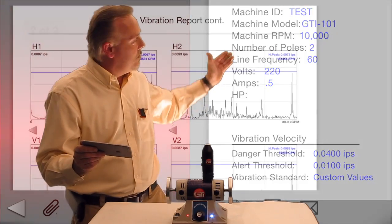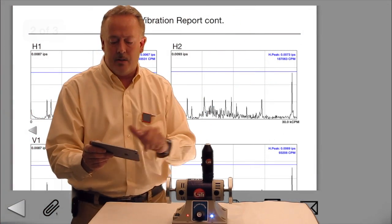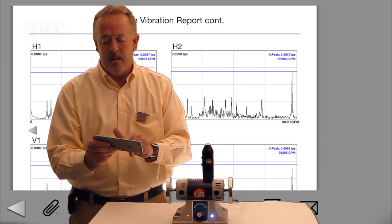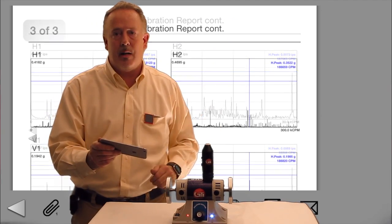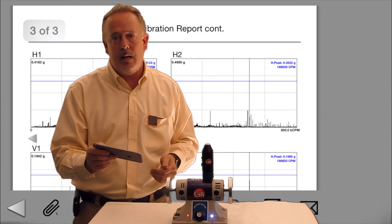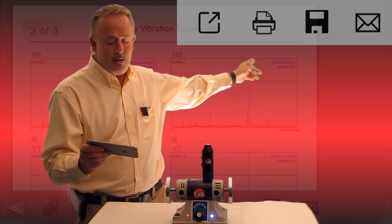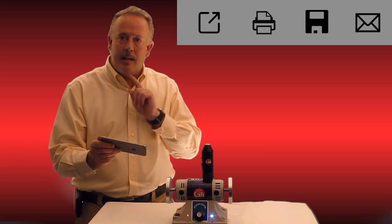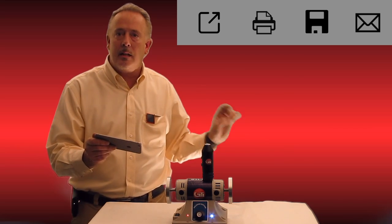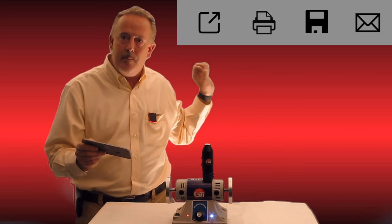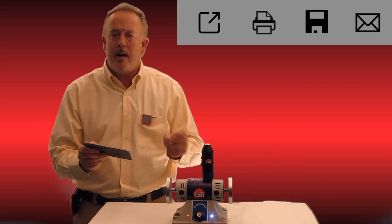And as you see me scroll down here, now we've got our velocity spectrums, every single one I've taken, and my acceleration spectrums, every single one I've taken. And that's all built into the report. And as you can see on the bottom of the screen, I can simply email that, I can save it to the app to email it later, or I can wirelessly print to a local wireless printer right on the network.